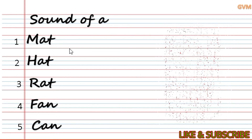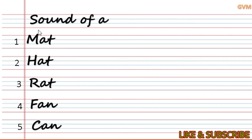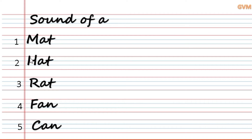Okay children, repeat after me. First line में Sound of A write करेंगे। Number one: M-A-T, mat. Number two: H-A-T, hat. Number three: R-A-T, rat. Number four: F-A-N, fan. Number five: C-A-N, can.